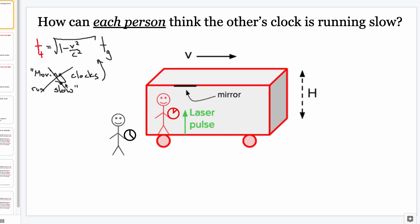The better way to say it is: clocks that are measured to be moving will be measured to run slow by the person doing the measuring of that moving. You see, it doesn't really roll off the tongue very easily. The shorter version sounds better and gets the idea across, but it's kind of meaningless — because 'moving clocks,' we can't tell who's moving.